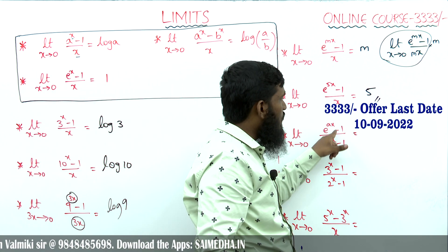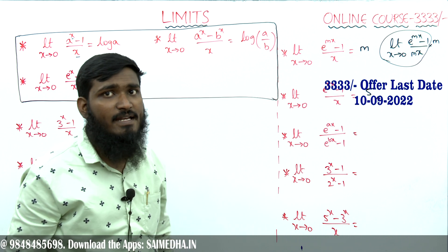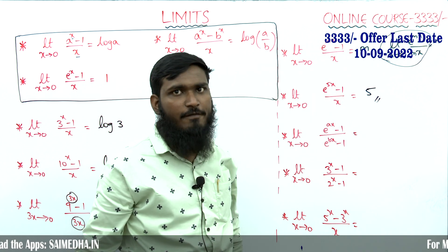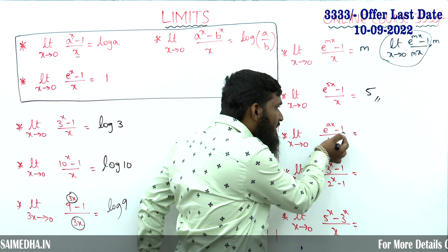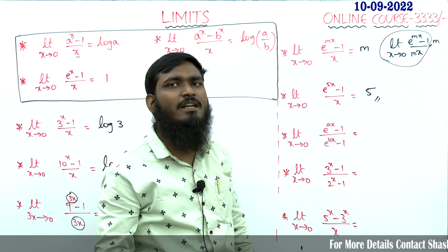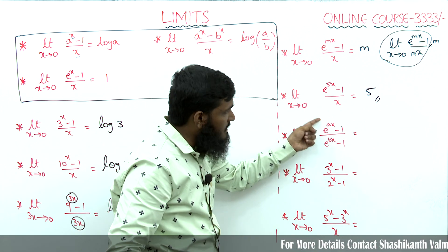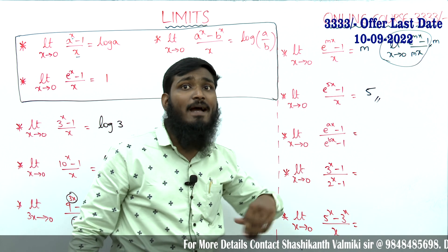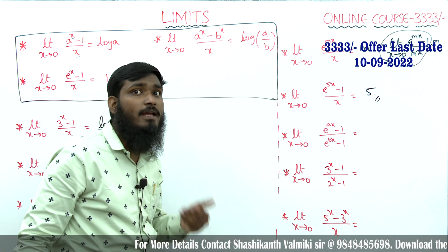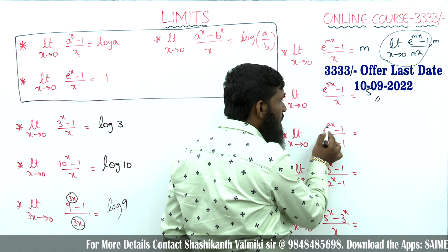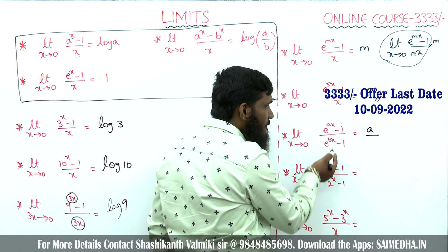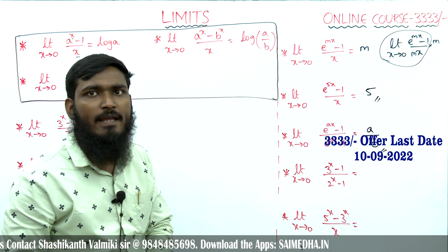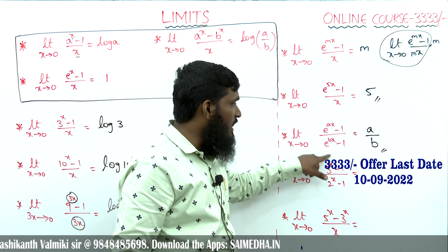Next: limit x tends to 0, e^(ax) minus 1 divided by e^(bx) minus 1. Here we do not have division by x directly, so we divide both numerator and denominator by x. The numerator becomes a and the denominator becomes b, so the final answer is a over b.